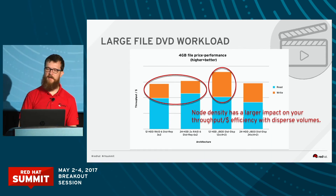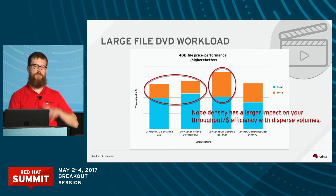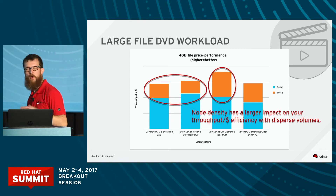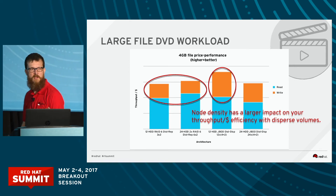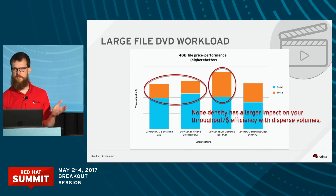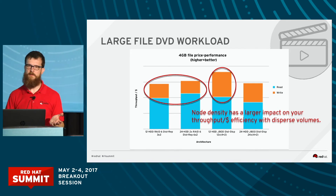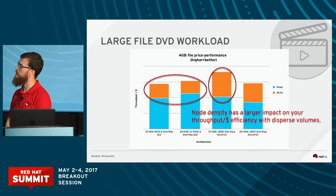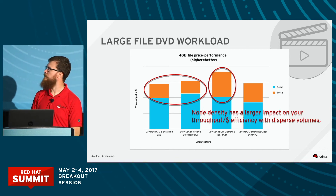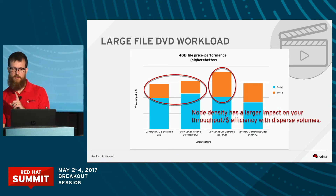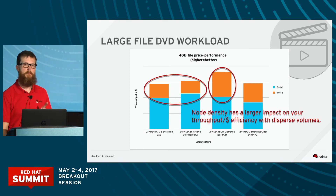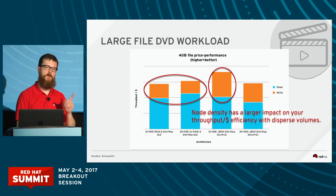What you'll find on the less dense versus more dense servers when looking at the replicated volume is there's not a whole lot of difference — so you could kind of go 12 disks, 24 disks, and it's not going to make a massive difference if you need to go with replication. But if you are going to go with the dispersed volume, we actually do see better overall efficiency for the less dense servers.